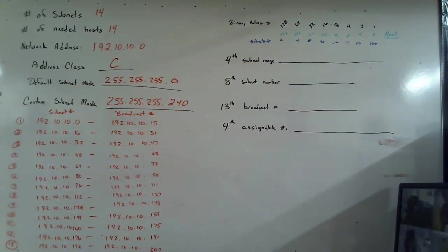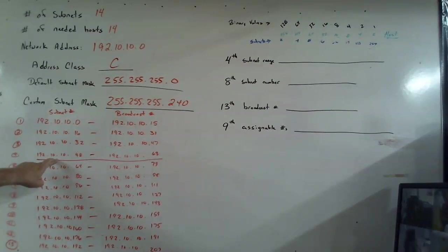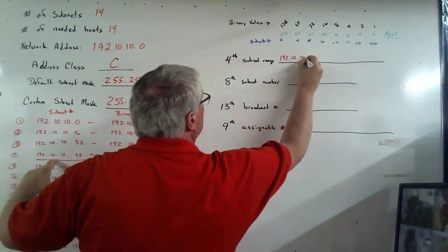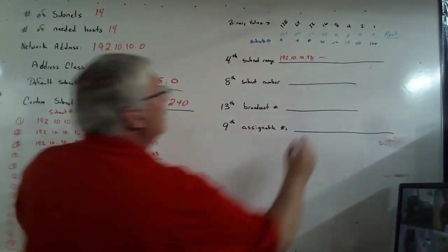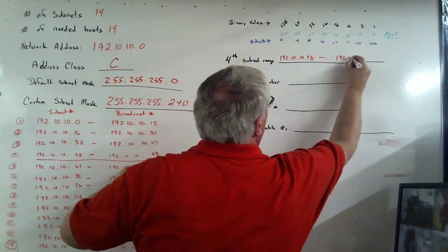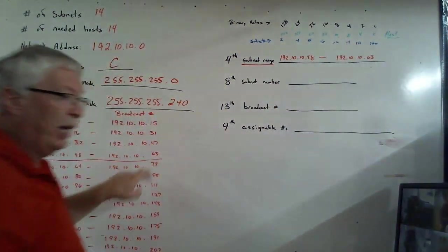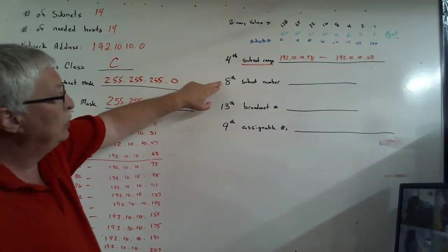The very first one is the fourth subnet range. So I look for my fourth range. One, two, three, four. Here it is. So our beginning number or our subnet number is 48. So 192.10.10.48. And it runs all the way to the 63. So 192.10.10.63. Now this asks for the range, the subnet range. That means all the numbers.